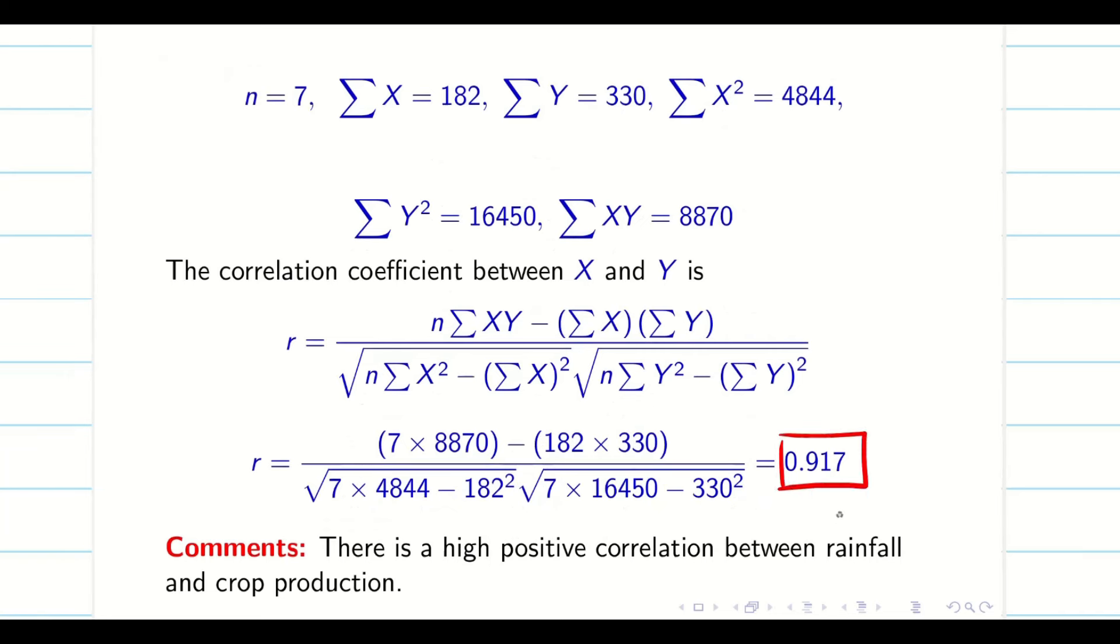Now I can say 0.19, it is highly positive correlation. So therefore, I can make a comment, rainfall and the production of the crops are highly positive.